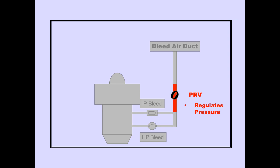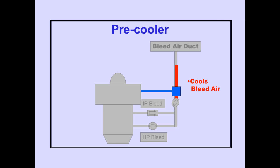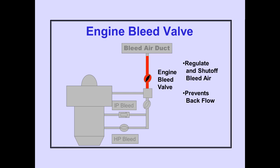The pressure regulating valve, or PRV, regulates pressure. The pre-cooler uses engine fan air to cool the bleed air, reducing temperatures in the bleed air system. The engine bleed valve is used to regulate and shut off engine bleed air, and also prevents backflow to the engine.